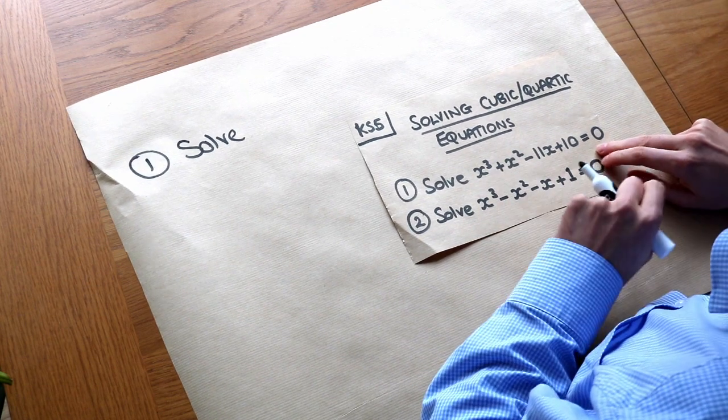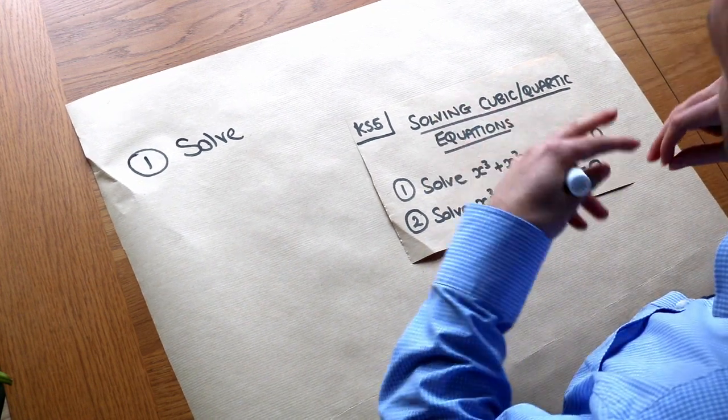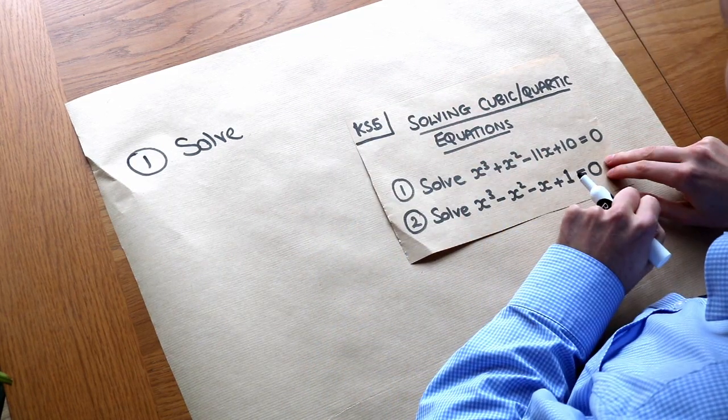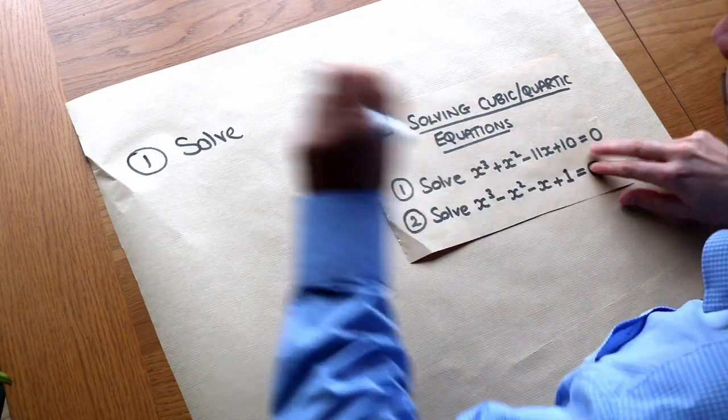And the method we're going to use here for cubics is just to factorise. But it's a bit harder to factorise because with quadratics we can think of like two numbers that add to the middle number, etc. But with cubics it's not quite so easy. So we're going to see the strategy behind that.